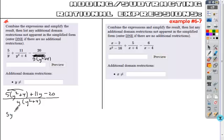I wind up with 5y squared plus 20 plus 11y minus 20. So I see that my constants cancel.